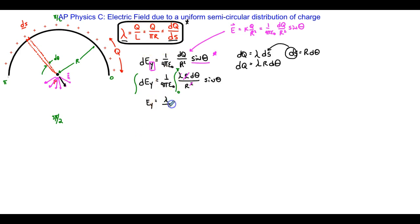So that becomes lambda over 4 pi epsilon naught times the integral of 0 to pi of sine theta d theta. And I have an R in the denominator right here that I forgot to pull out. And I'm going to put that out here in front. And the reason is, it's a constant. R is not changing as I move around the circle.